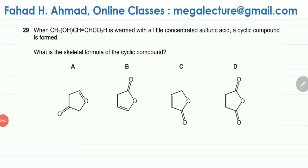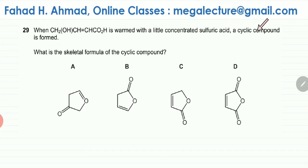The question presents a molecule with an OH group, a double bond, and a carboxylic acid group. With a little concentrated sulfuric acid, a cyclic compound is formed. What is the skeletal formula of the cyclic compound? This reaction is using concentrated sulfuric acid.